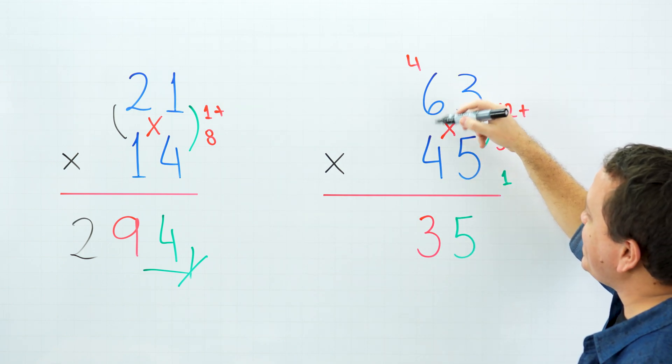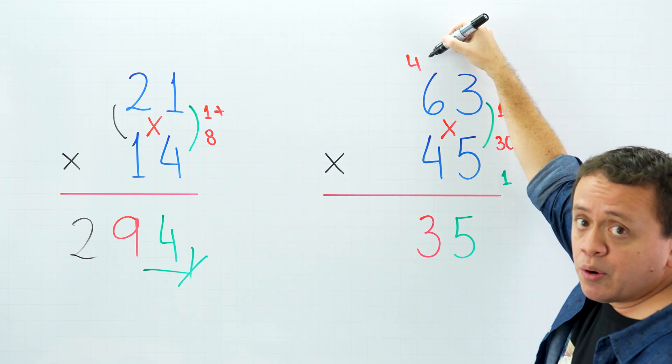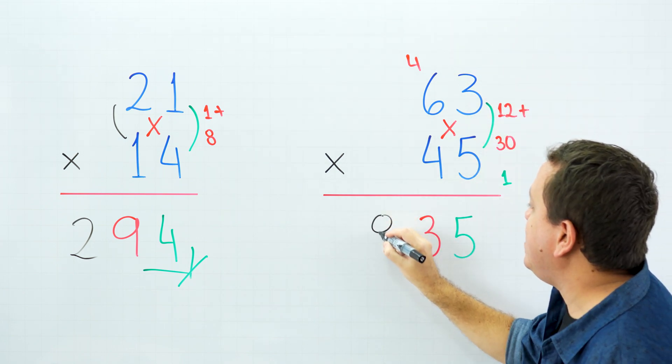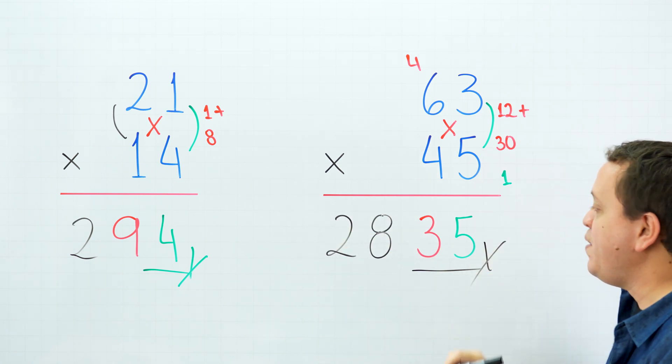Finally, we just need to multiply the digits on the left side, and 6 times 4 is 24, plus 4 that we carry gives us 28. That's right, 28. Our final answer is 2875.